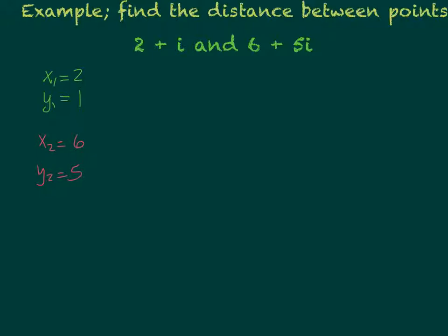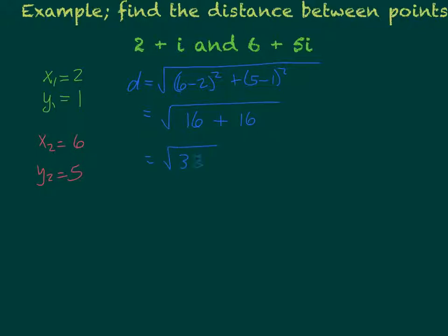So now I put those together to find the distance. D equals the square root of 6 minus 2 squared plus 5 minus 1 squared. Then I simplify: square root of 16 plus 16, that's 4 squared plus 4 squared, equals the square root of 32, which simplifies to 4 square roots of 2. So the distance is 4 square roots of 2.